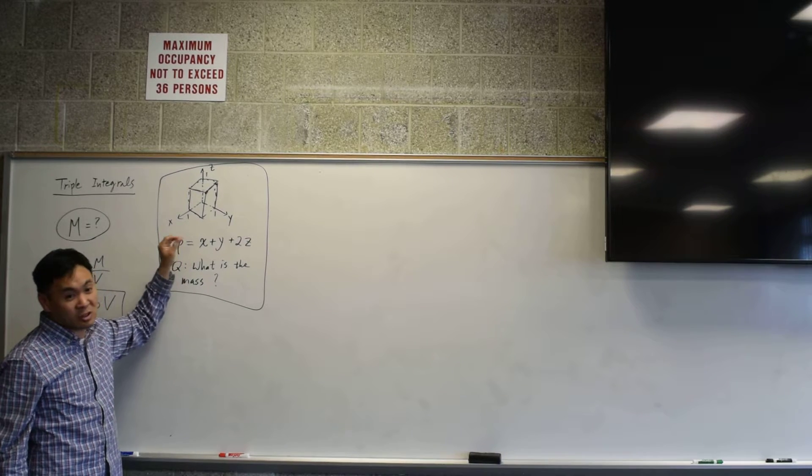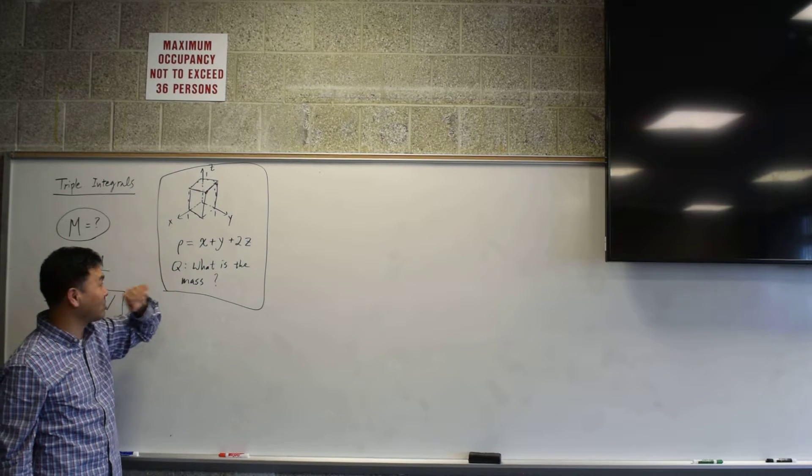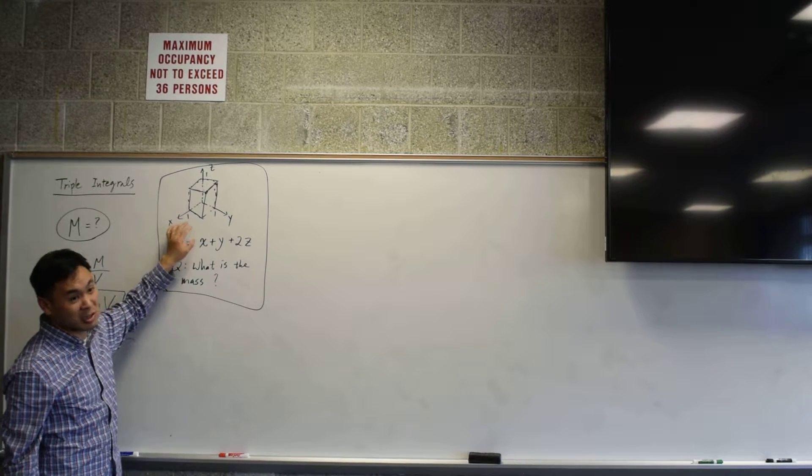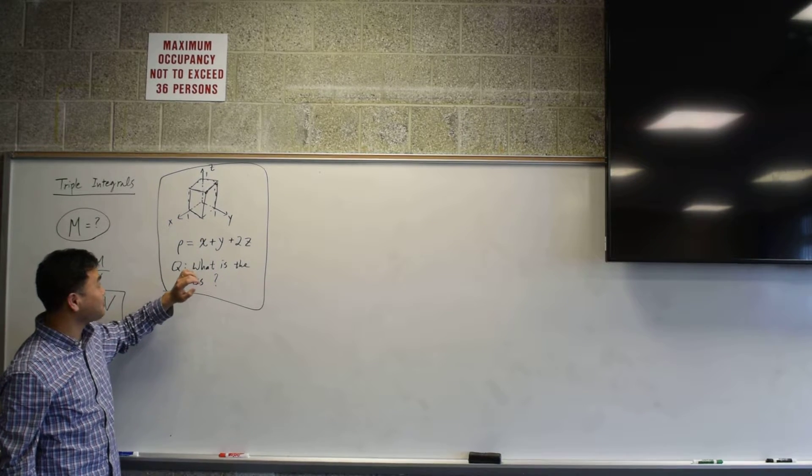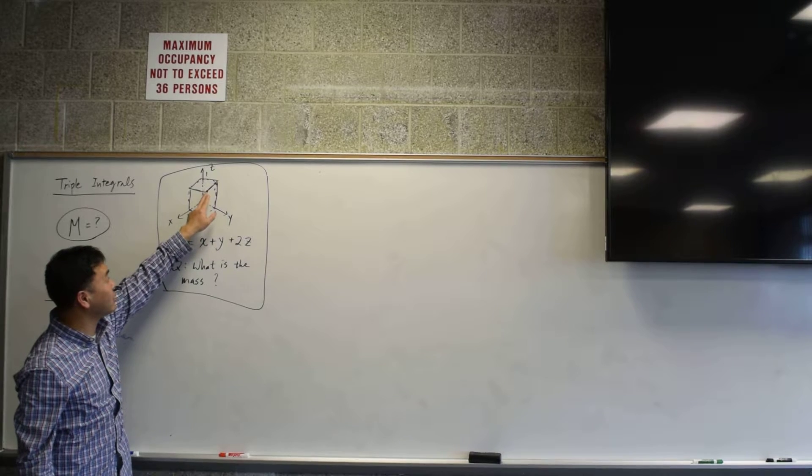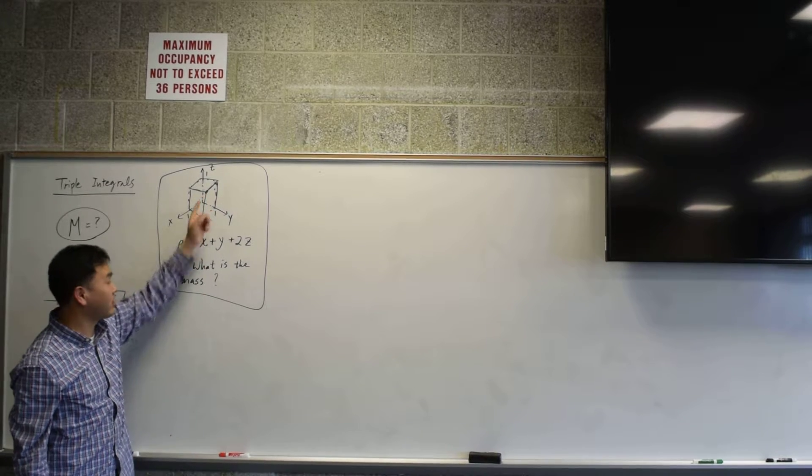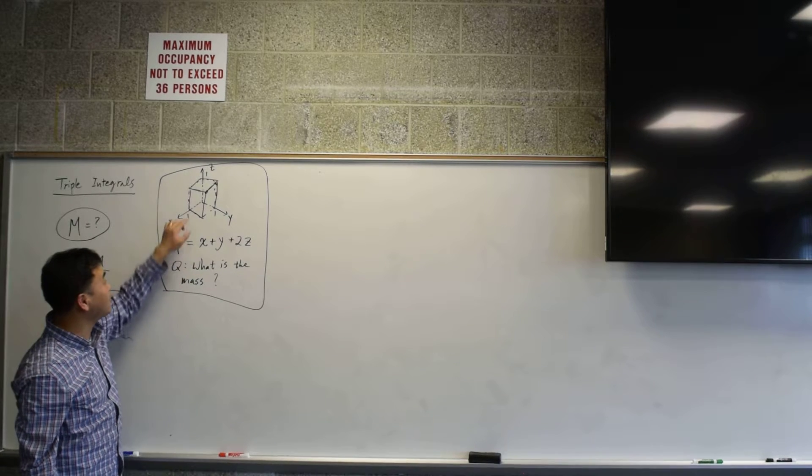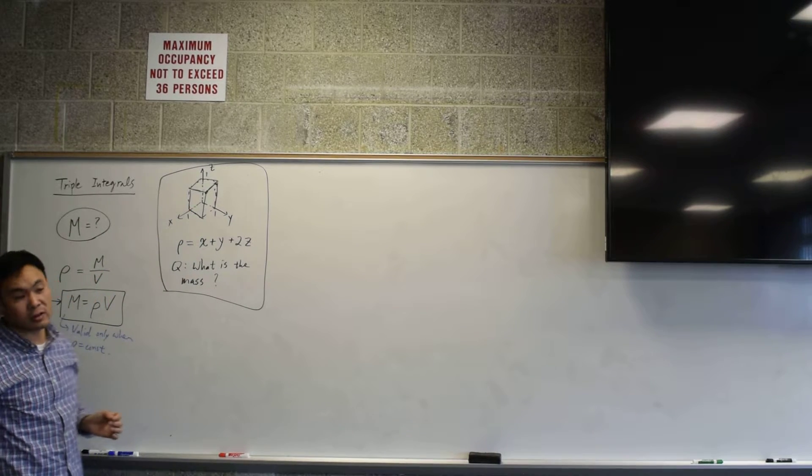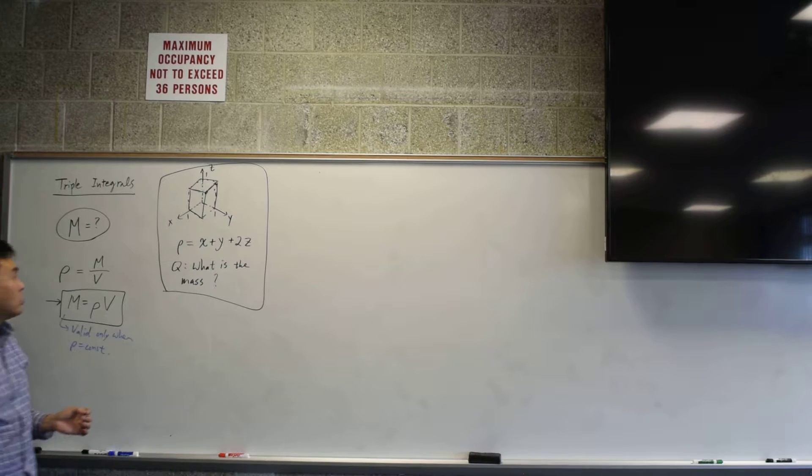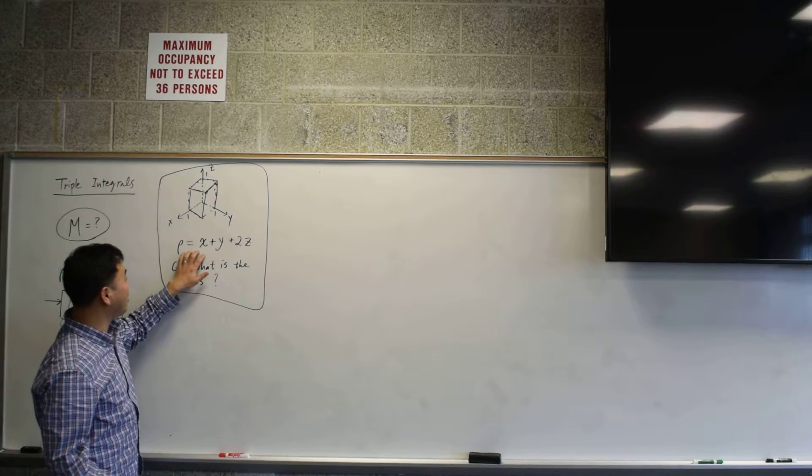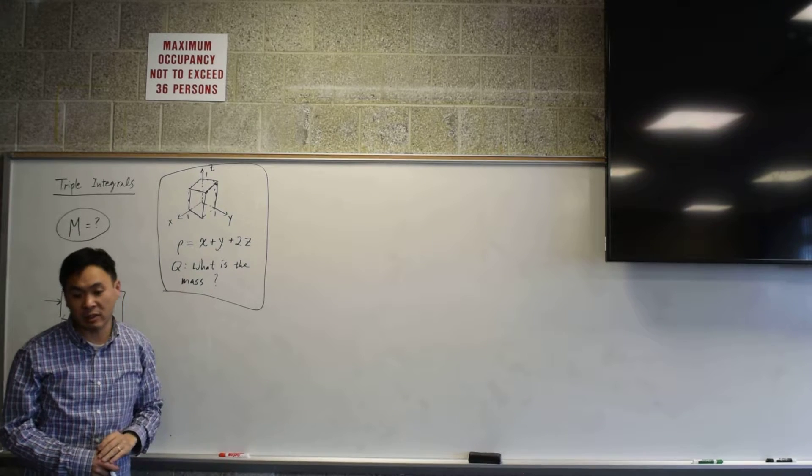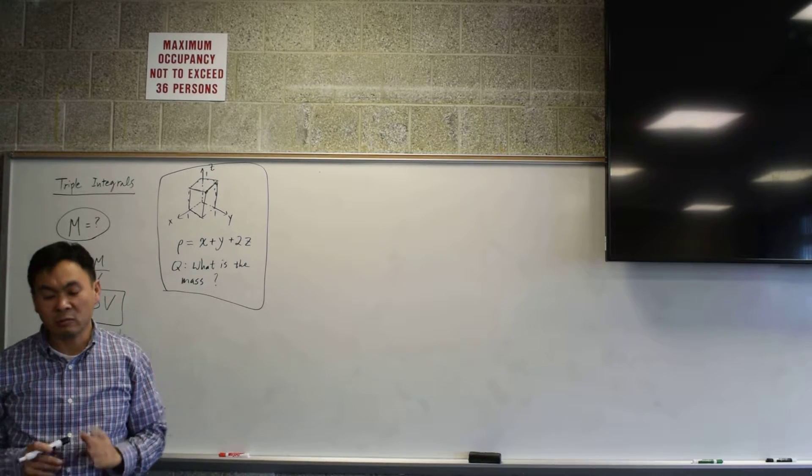I didn't write any units, but you can pick your own units. Let's say this is like kilograms per cubic meters, and these are meters. So the density at this point, that vertex, is 4 kilograms per cubic meters, whereas near the origin it's almost 0.